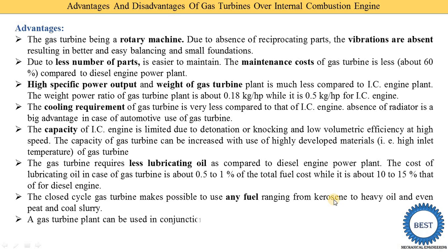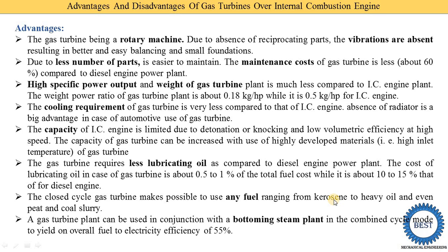A gas turbine plant can be used in conjunction with a bottoming steam plant in combined cycle mode to yield an overall fuel-to-electricity efficiency of 55%. In an open cycle gas turbine plant, instead of removing exhaust gas to the atmosphere after expansion, we can supply it to a boiler, which produces steam to run a steam power plant. This combined cycle mode achieves 55% efficiency.